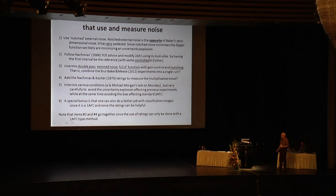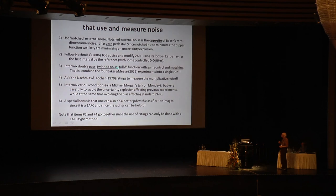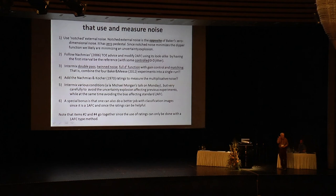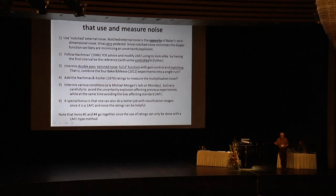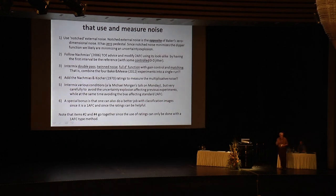Follow his advice, and then you can do Baker's thing of intermixing all of this: double pass, twin noise, the full d-prime slope — not just the slope but the full d-prime function — and do a matching thing for appearance, following what Michael Morgan said. Also add the 1970 ratings approach, so you can get the ROC slope to actually measure the internal noise. Michael's advice was to intermix various conditions that look alike — don't intermix a blank or zero mask with a mask with things that look alike. As a special bonus, you can do a much better job on classification images, because if you do 2-AFC with classification images everything gets messed up, so the one-AFC task is much better.